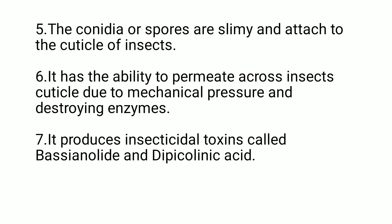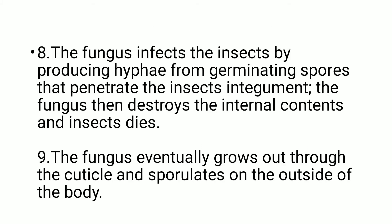The fungus exerts extreme pressure on the cuticle of the insect, and by breaking through the cuticle it enters the body of the insect. After entering, it neutralizes the enzymes present inside the insect's body. It produces insecticidal toxins called bassianolide acid. The fungus infects the insect by producing hyphae from germinating spores that penetrate the insect integument, then destroys the internal contents and the insect dies.